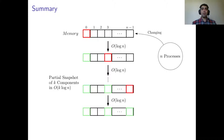We devised an object that allows the process to adaptively read a consistent view of k-memory components in order of k log n. Adaptively means that the process doesn't require to read all of the k-components at the same time. It can choose what component to read next based on the information it gained by reading the previous component.